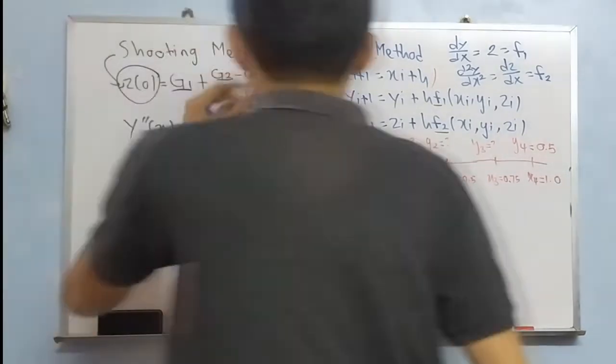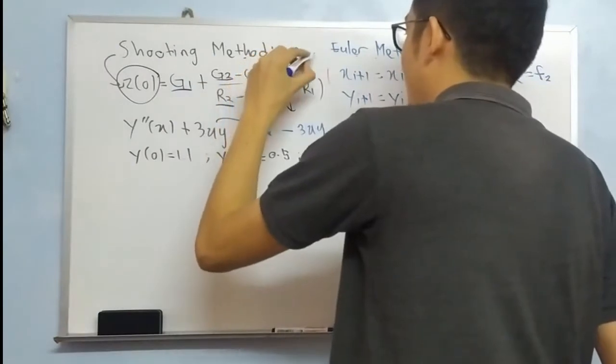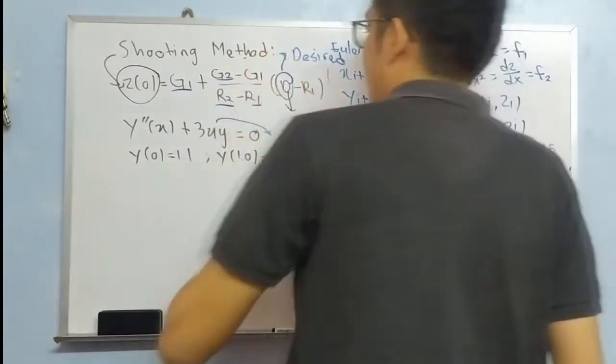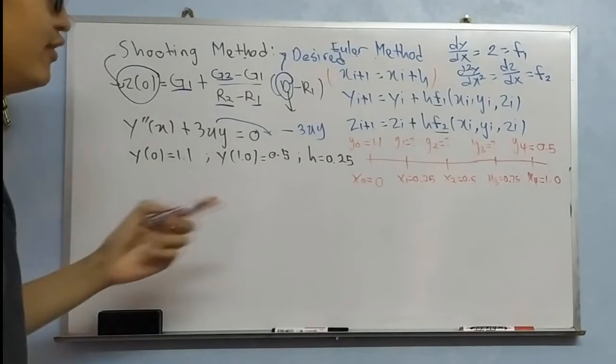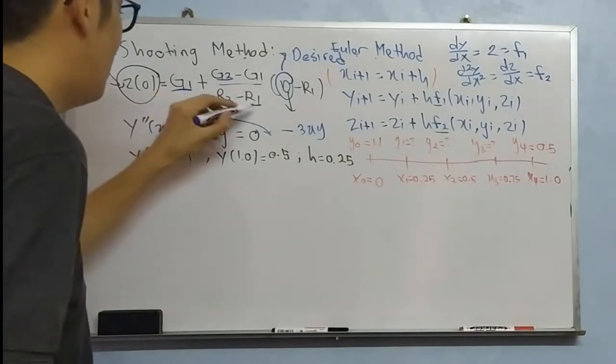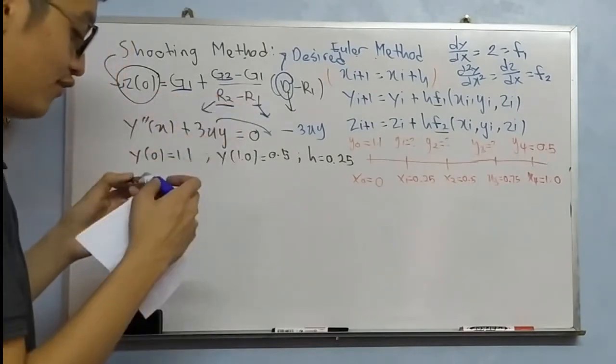First of all, what is D? D is the desired value. And R2 is the final result from second guess, while R1 is the final answer from first guess.